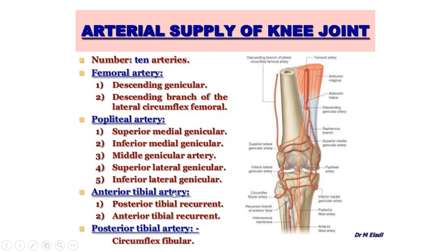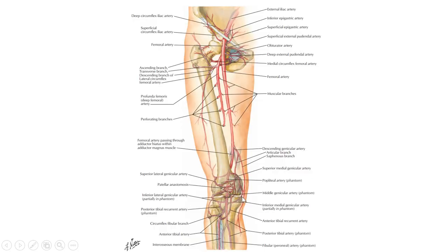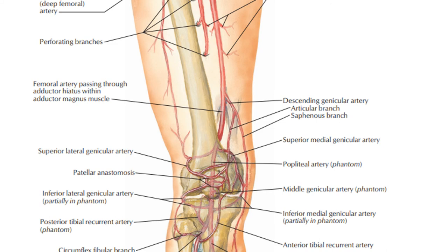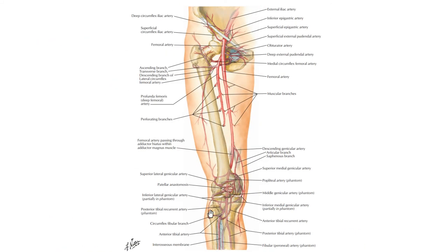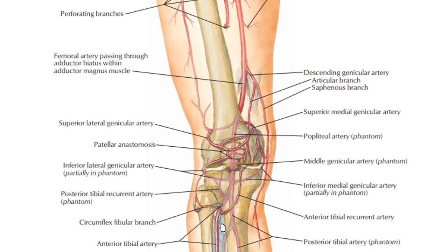The anterior tibial artery gives the anterior tibial recurrent branch, and the posterior tibial artery gives the posterior tibial recurrent branch — called 'recurrent' because they flow back upward. All these arteries participate in the formation of the periarticular plexus, which gives blood supply to the knee joint.